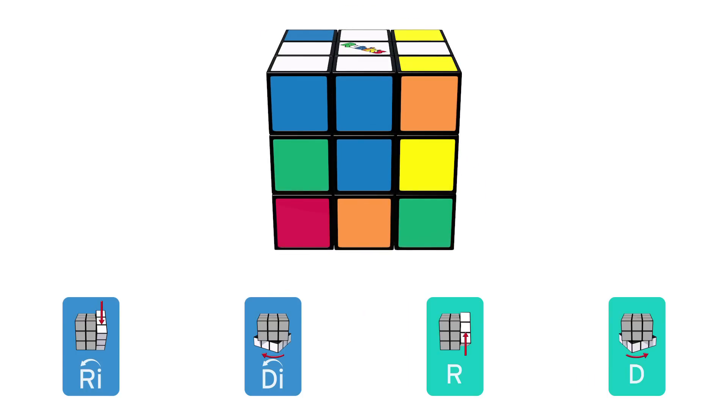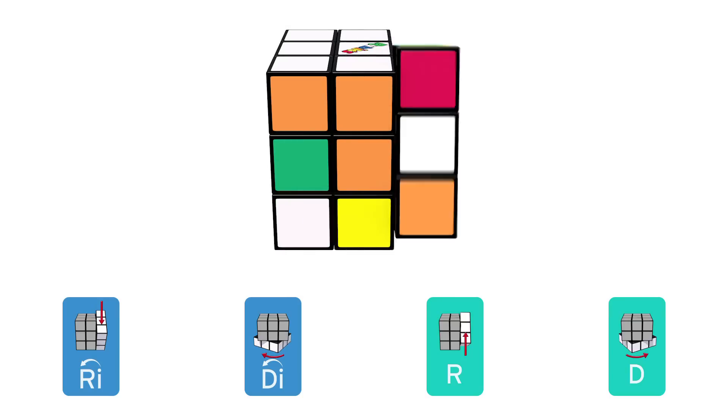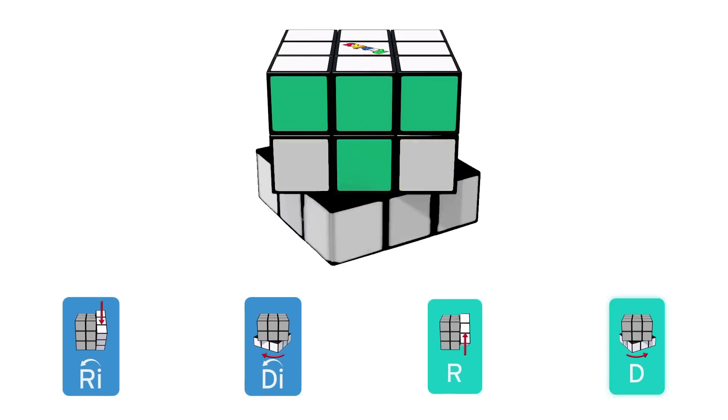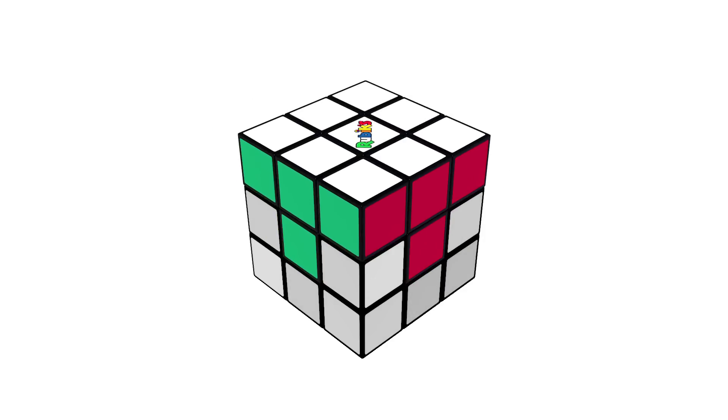Now, find the next white corner and repeat those steps until they're all where they're supposed to be. We've sped it up for demonstration purposes only, but keep going with right inverted, down inverted, right down. Now your cube should look like this.